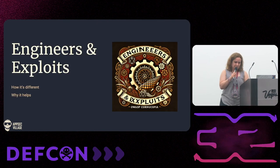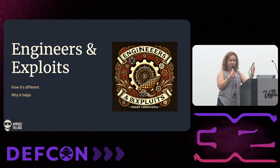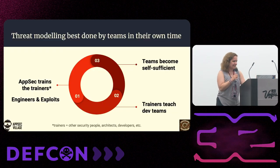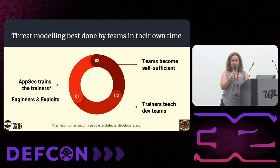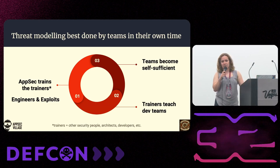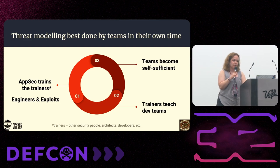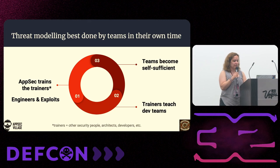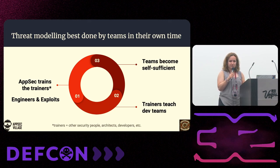That's where Engineers and Exploits comes in. Spiros really likes Dungeons and Dragons — he really wanted to call it this. The idea behind this game is to make it like a mini game based on Cornucopia to train the trainers. Trainers can be whoever: other security people, developers, architects, anyone that wants to go back to their teams and introduce the mindset of threat modeling, making sure that engineering teams are self-sufficient and don't just depend on security being there.